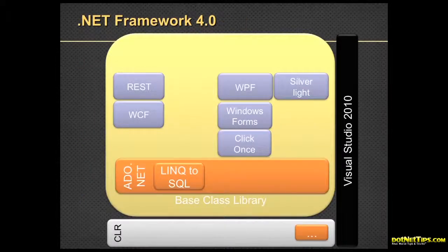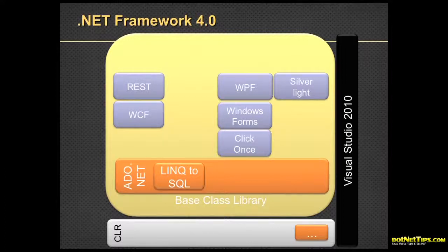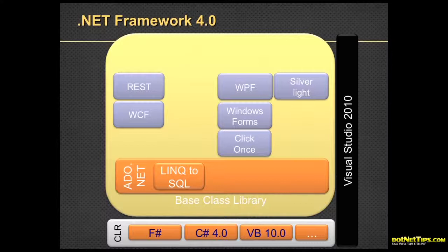So 4.0 was a huge change. .NET 3 sat on top of .NET 2, .NET 3.5 sat on top of 3 and 2, and .NET 3.5 SP1 sat on top of all those. With 3.5 you could multi-target applications from Visual Studio 2008 — writing .NET 2, 3, or 3.5 applications because they all sat on the same framework. .NET 4 is a brand new framework. We have C# 4, VB10, F#, and new things like the M language.